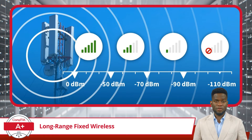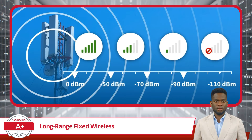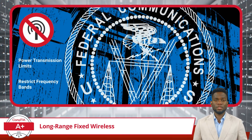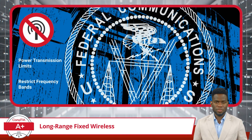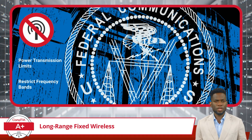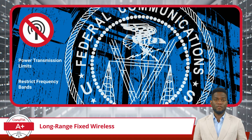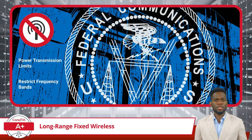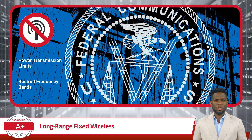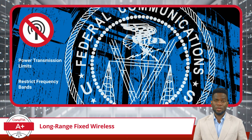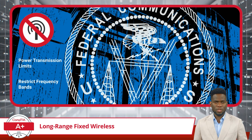However, it's not just about cranking up the power. Higher power can cause more interference and requires more energy. This brings us to regulatory requirements. Each country has its own regulations governing the use of radio frequencies and transmission power. In the United States, the Federal Communications Commission, or FCC, sets these rules, which might include what channels are reserved for licensed and unlicensed use, or the allowable limits for transmit power. Adhering to these regulations ensures that different wireless systems can coexist without causing harmful interference to each other.